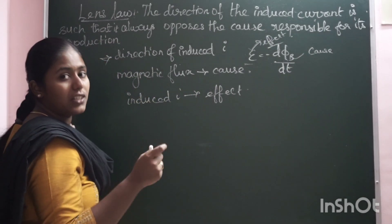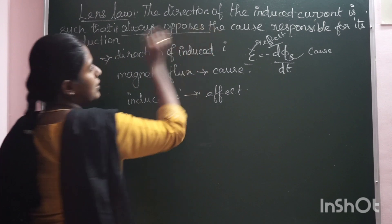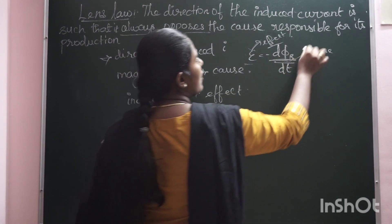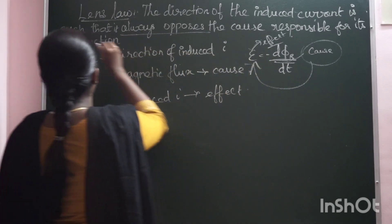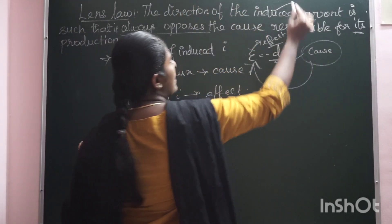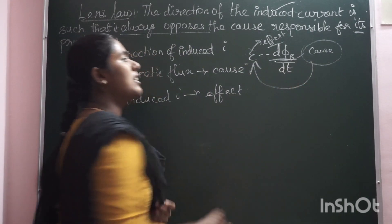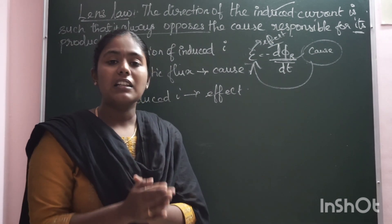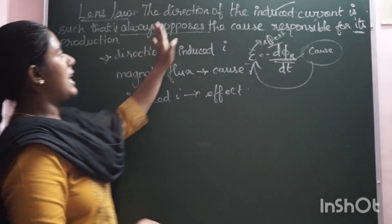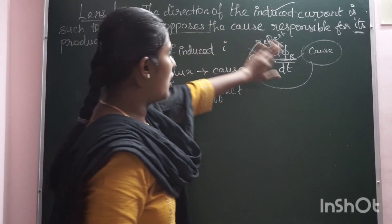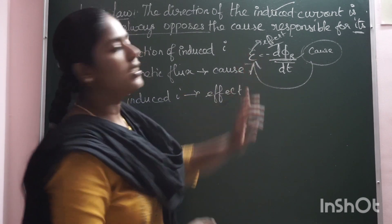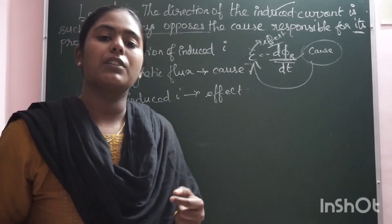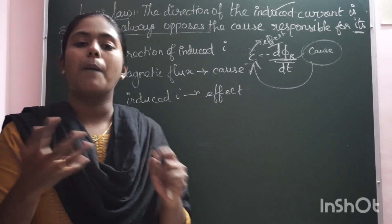The effect opposes the cause — the cause responsible for its production. The direction of induced current is always such that it opposes the change in magnetic flux. So the direction of induced current is always opposing the cause responsible for its production. The cause produces the effect, and the two are always opposing each other.